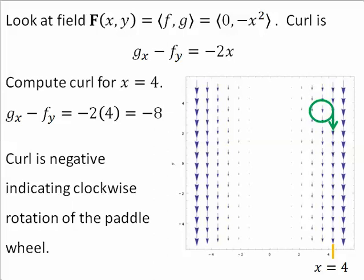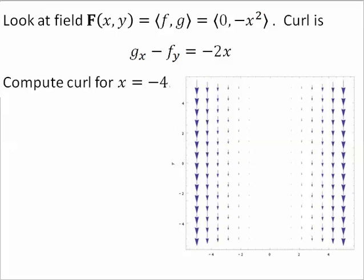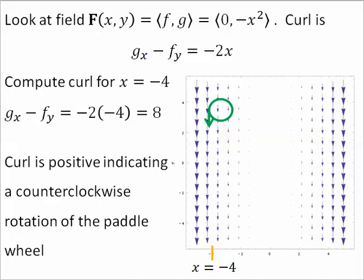How about for X equals negative 4? Find the curl for negative 4. If the X component of a point is negative 4, the curl is positive at that point, indicating a counter-clockwise rotation of the paddle wheel.